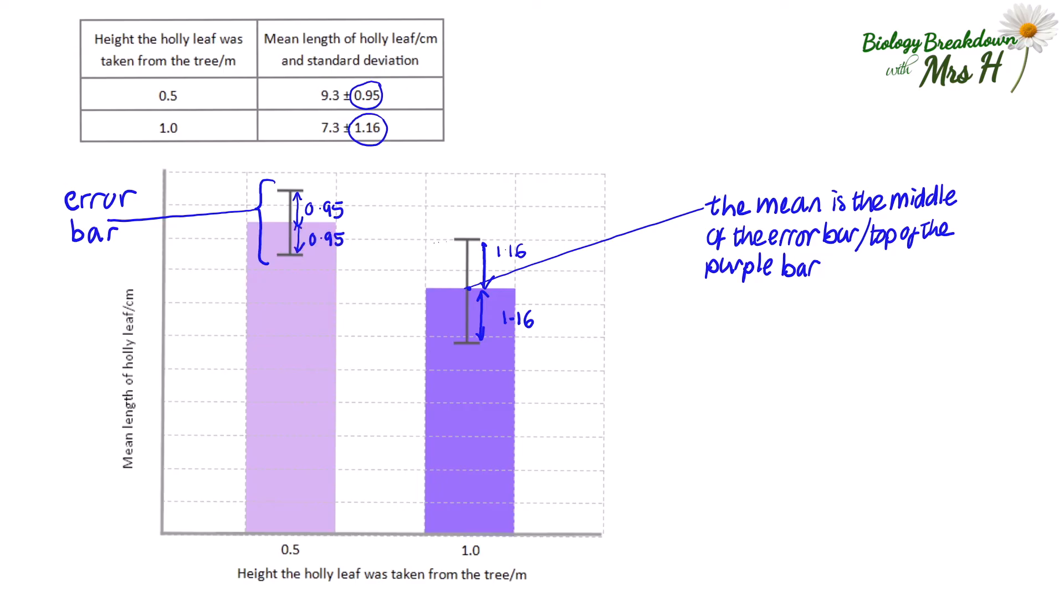Look at the top of the error bar at 1 meter. It overlaps with the error bar at 0.5 meters. This shows that even though there is a difference in the means the variation in the data collected overlaps. In other words some of the biggest leaves at 1 meter are the same lengths as the smallest leaves at 0.5 meters. So this shows that there isn't a significant difference between these two means.